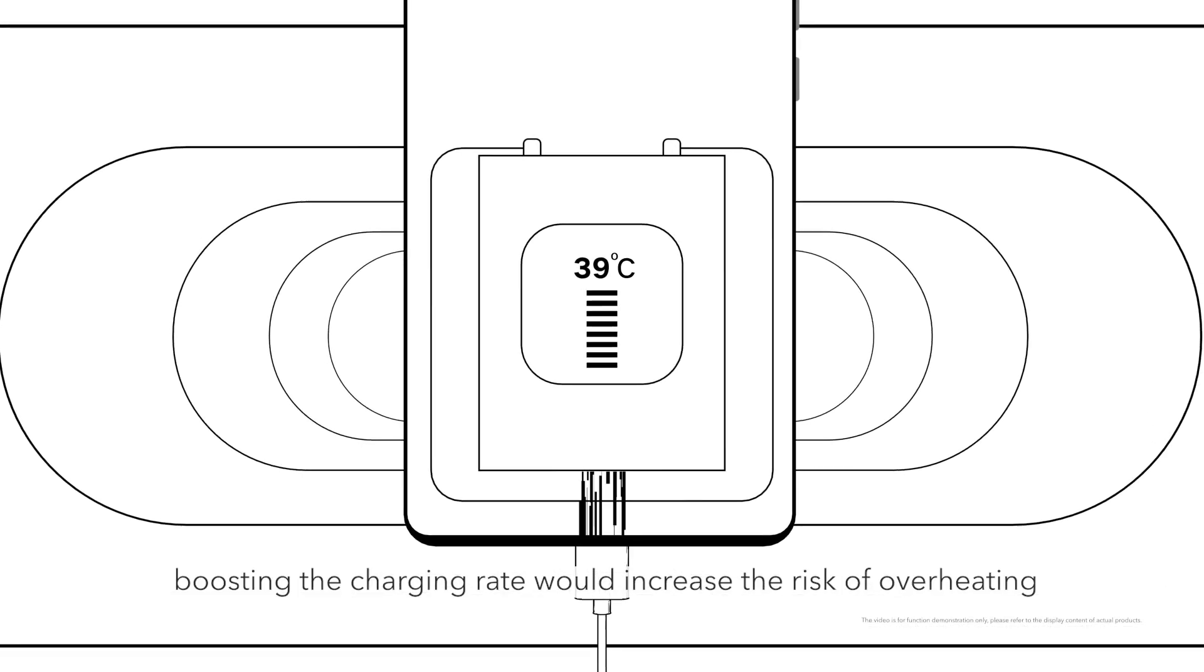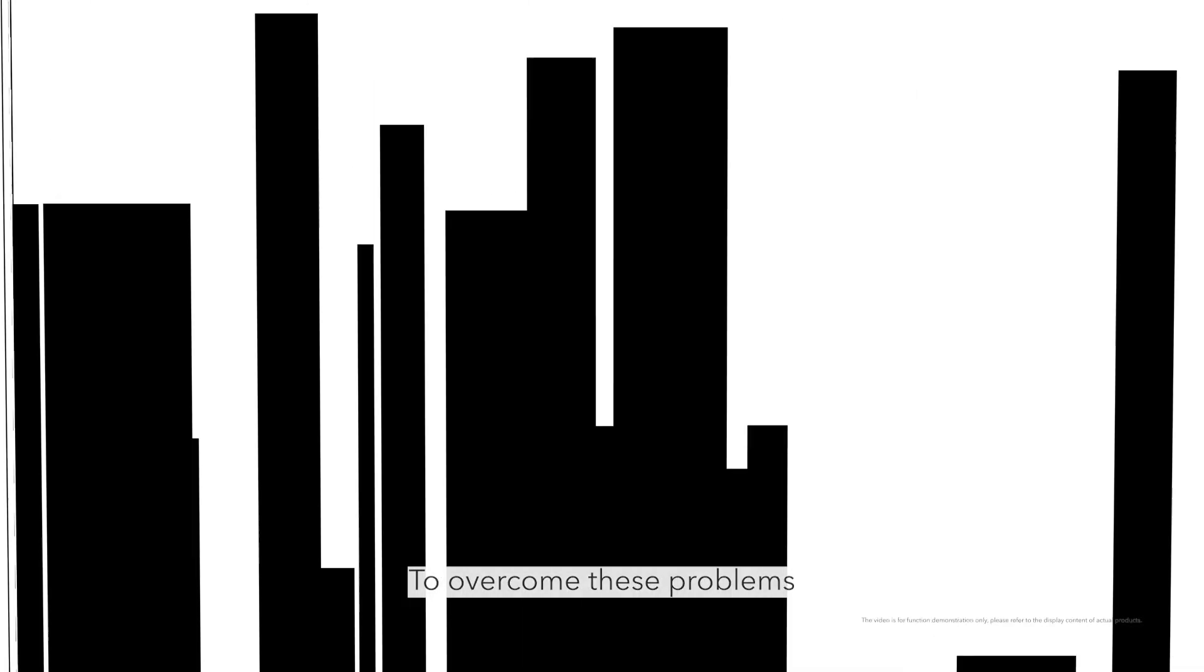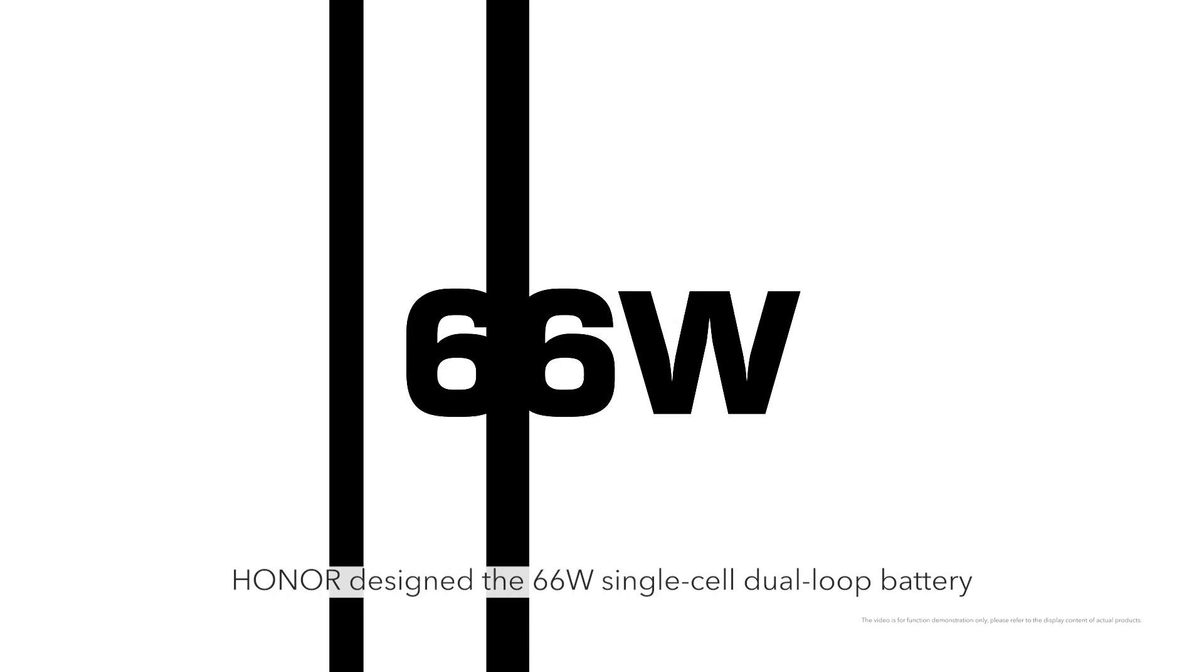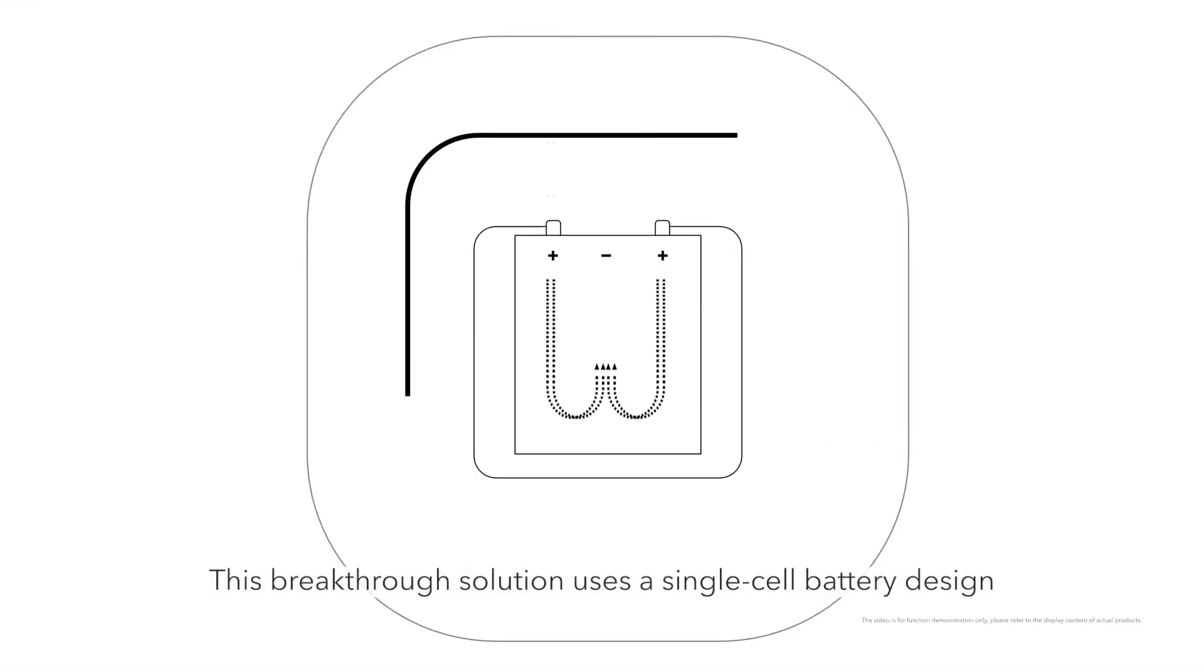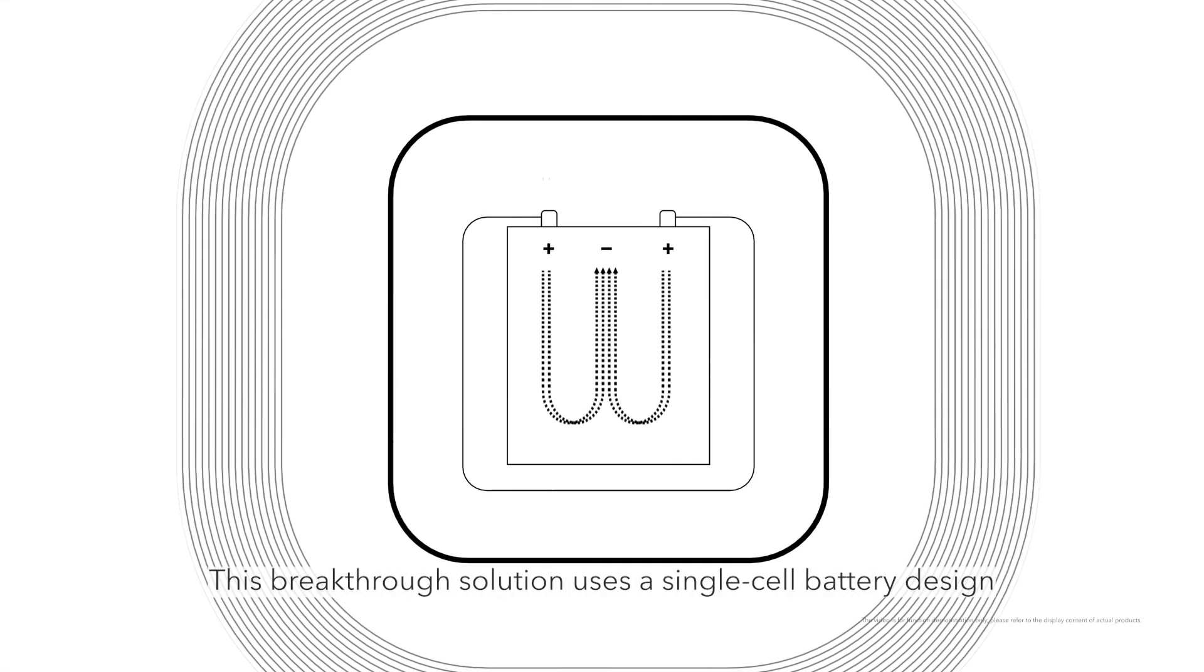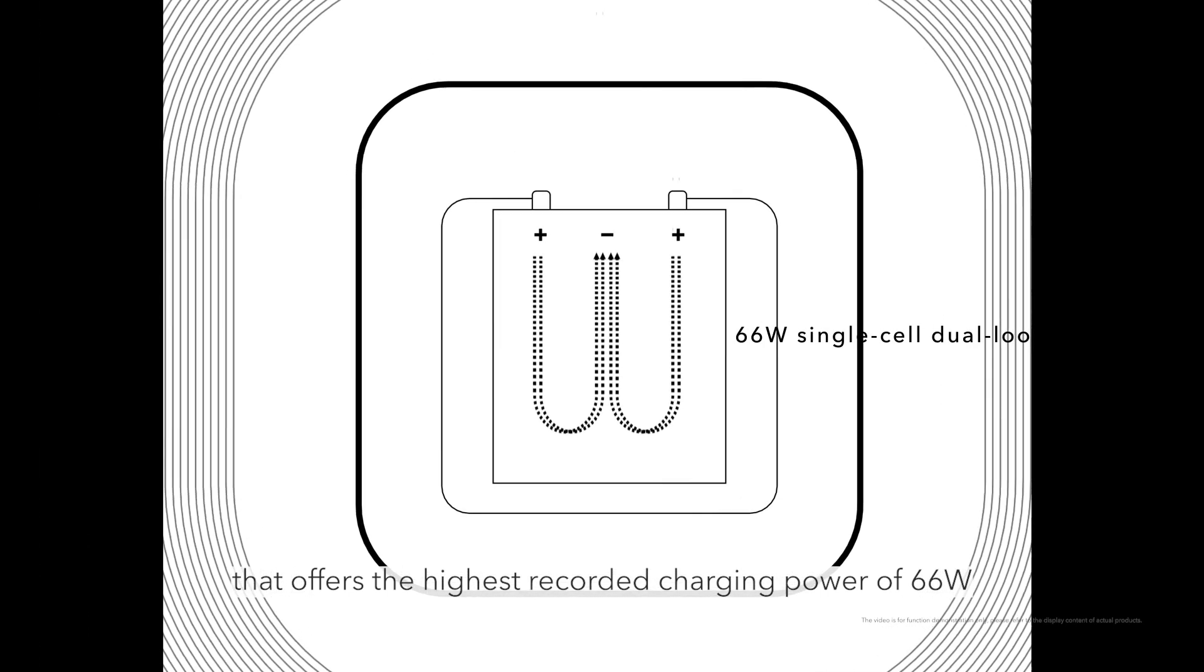To overcome these problems, Honor designed the 66-watt single-cell dual-loop battery. This breakthrough solution uses a single-cell battery design that offers the highest recorded charging power of 66 watts, all while reducing power loss and heating.